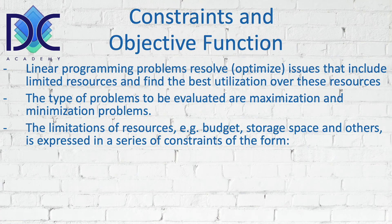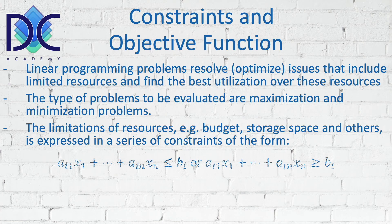The limitations of resources are in fact used to create the constraints. We have the limitations of resources — people, machines, budget, storage space, and other elements — and they are expressed in a linear combination of the different parameters, the coefficients a₁ to aₙ and the variables x₁ up to xₙ. We can express those constraints as being smaller than or equal to a number bᵢ, or larger than or equal to that same coefficient, depending on the problem.